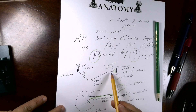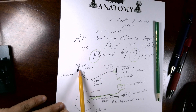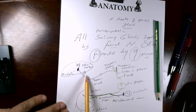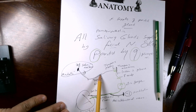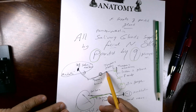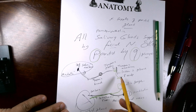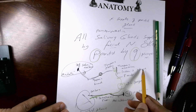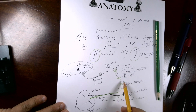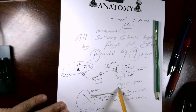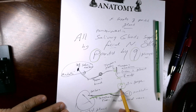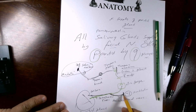To summarize the nerve supply of the parotid gland: starting from the inferior salivatory nucleus in the medulla, the glossopharyngeal nerve sends a tympanic branch through the tympanic canaliculus, enters the petrous bone, exits as the lesser superficial petrosal nerve, passes through foramen ovale, synapses in the otic ganglion, and postganglionic fibers join the auriculotemporal nerve — a branch from the posterior division of the mandibular nerve — to reach the parotid gland.